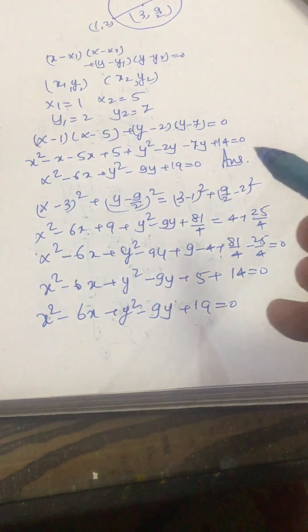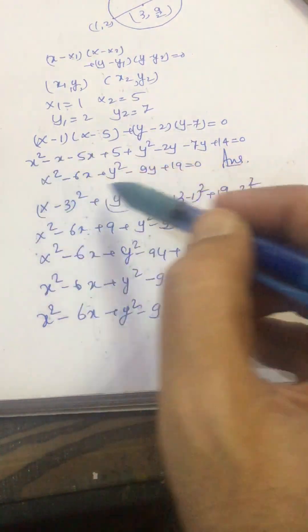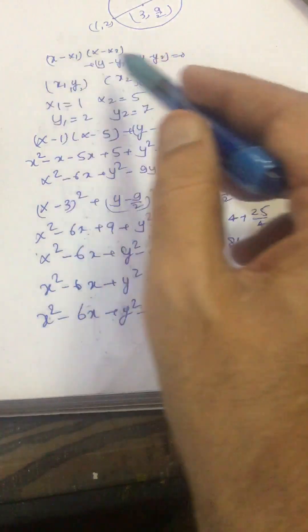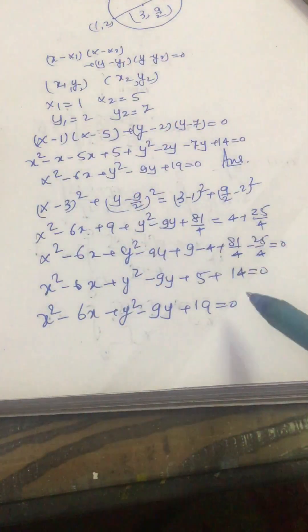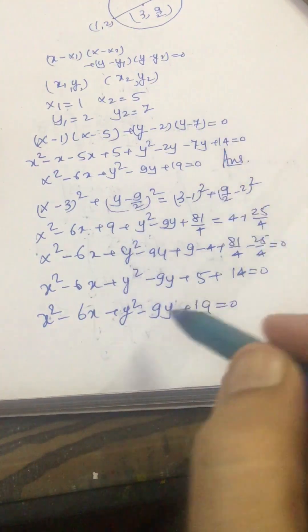We have got the same equation. This equation we got by using this theorem or this result, and this we got by finding the center and radius of the circle.